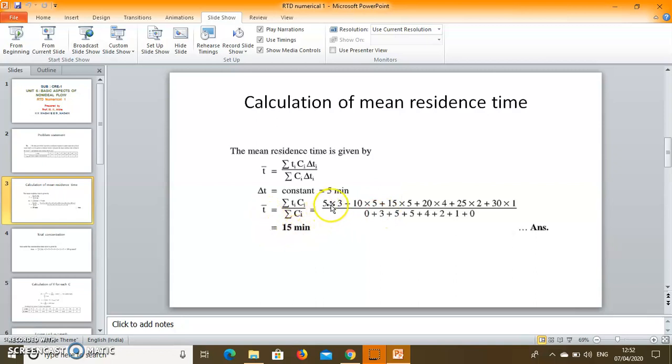So T bar value is 5 times 3 plus 10 times 5 plus 15 times 5 plus 20 times 4 plus 25 times 2 plus 30 times 1 divided by all the concentration values. So it will be 15 minutes. So mean residence time of each fluid is around 15 minutes.